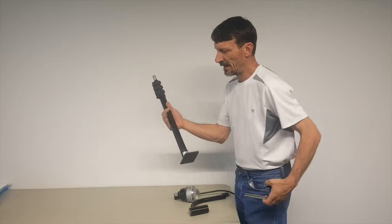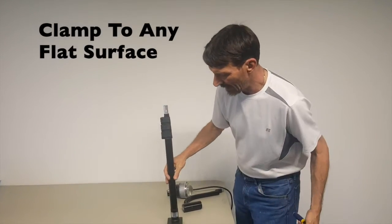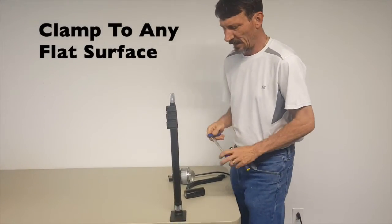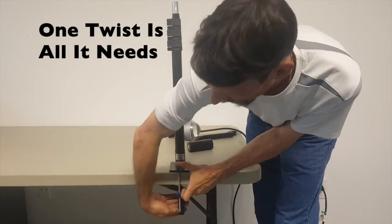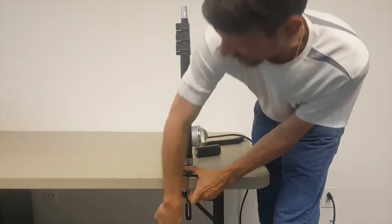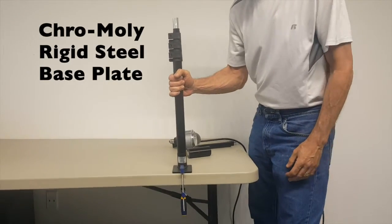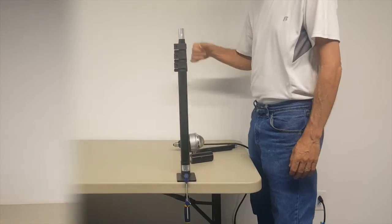Step number one, take the all aluminum constructed stand, place it on the edge of the table with the Irwin quick clamp and give it a little turn. It's so sturdy you can pick up the whole table with it.